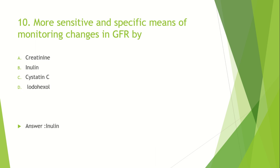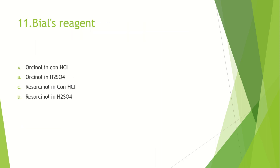Bial's reagent: Option A: Orcin in concentrated HCl. Option B: Orcin in H2SO4. Option C: Resorcinol in concentrated HCl. Option D: Resorcinol in H2SO4. The answer is orcin in concentrated HCl. This test is used for qualitative estimation of pentoses in urine, along with ferric chloride. The principle is the furfural derivative principle.